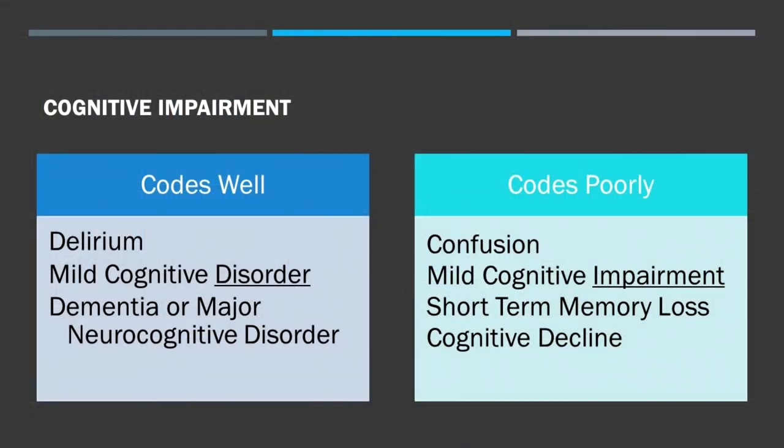For cognitive impairment, the key things to take away are: confusion does not code well, but delirium does — and a lot of what we call confusion is likely delirium, so you can write 'likely delirium' even if not completely sure. Also, mild cognitive impairment does not code because DSM-5 uses the term 'mild cognitive disorder.' Simply switching 'impairment' to 'disorder' will code well.